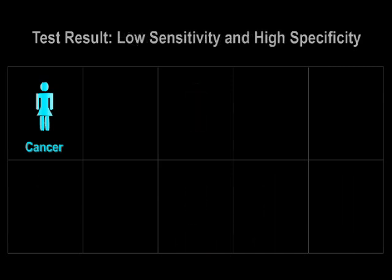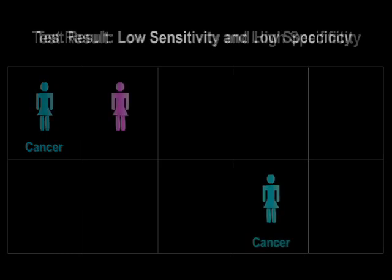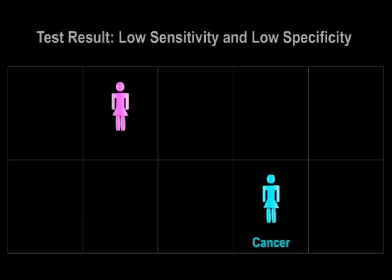If the test accurately detected only one of the three cancer cases, it would have reduced sensitivity. If it identified only one of the three cases and also incorrectly flagged any of the normal samples as cancerous, it would be said to have both reduced sensitivity and specificity.